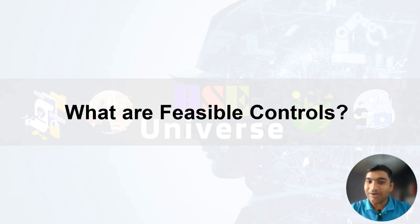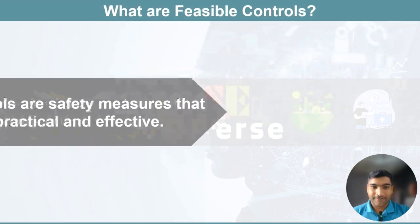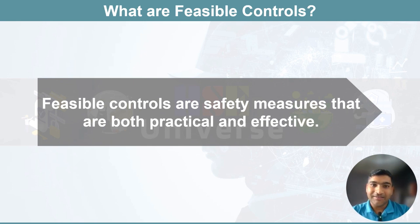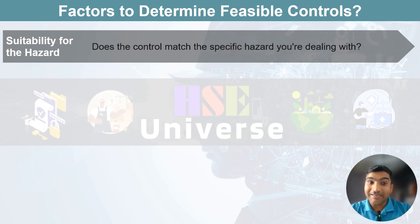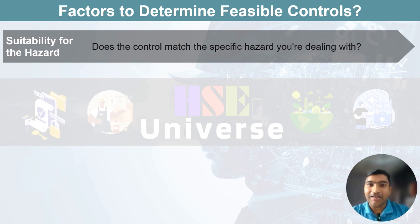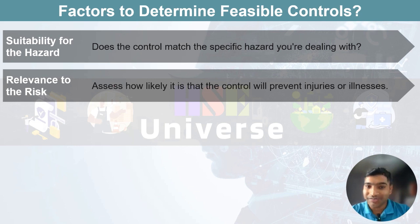So what are feasible controls? Feasible controls are safety measures that are both practical and effective. To determine if a control is feasible, consider the following factors. First, suitability for the hazard — does the control match the specific hazard you are dealing with? It is important that the control method is a good fit for the type of danger present. Second, relevance to the risk — assess how likely it is that the control will prevent injuries or illness, and ensure the control is at an appropriate level for the risk.